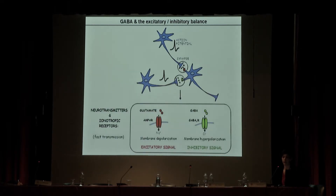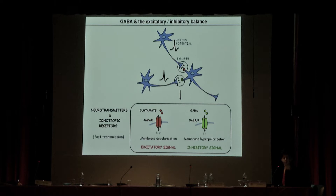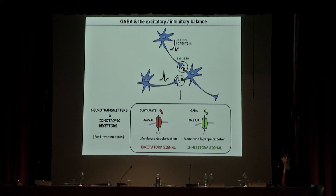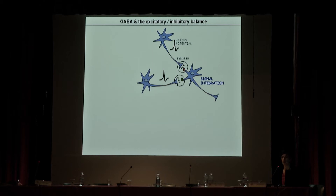In the mammalian brain, the two main neurotransmitters are GABA and glutamate. These bind to their specific postsynaptic receptors. In the case of ionotropic receptors, these receptors open when the neurotransmitter binds, allowing current to flow through the plasma membrane. Glutamate mediates a depolarizing, excitatory current, while GABA mediates a hyperpolarizing, inhibitory current. The neuron integrates all the signals it receives and behaves accordingly.